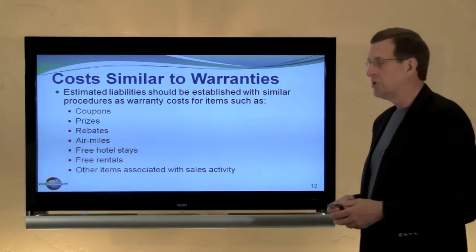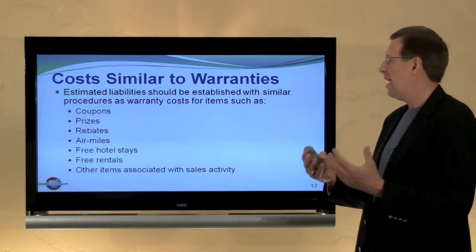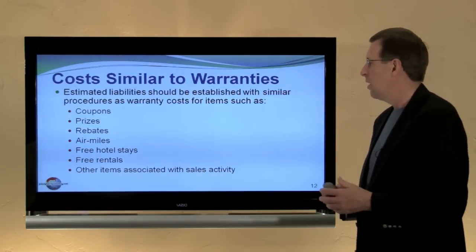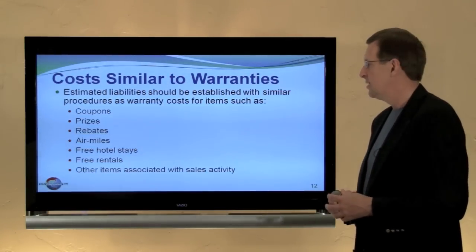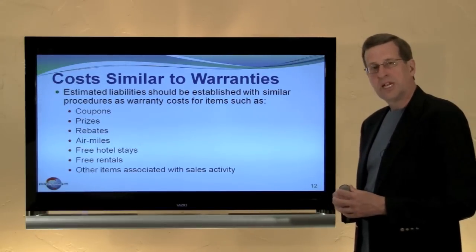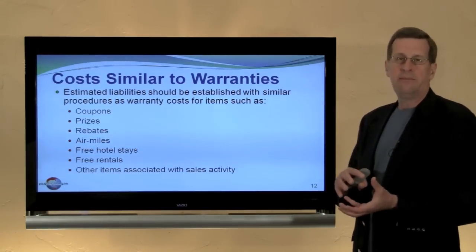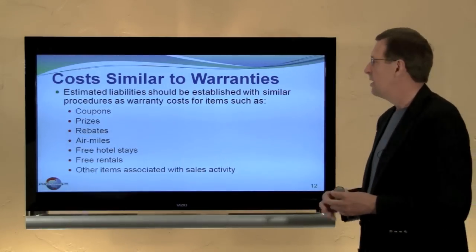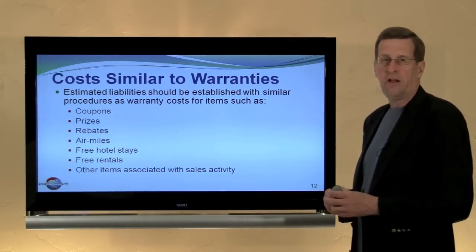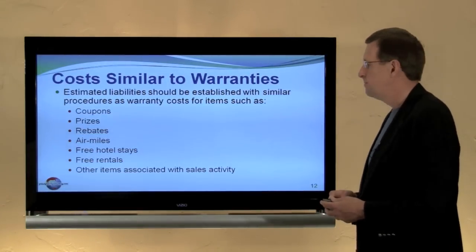There are other costs similar to warranties. These would include coupons, prizes, rebates, airlines with their frequent flyer miles programs, free hotel stays, free rentals, and other items associated with sales activities. All of these represent items that are deemed to be probable and subject to reasonable estimation — estimated liabilities that broadly fall under the umbrella of contingent liabilities susceptible to accrual.